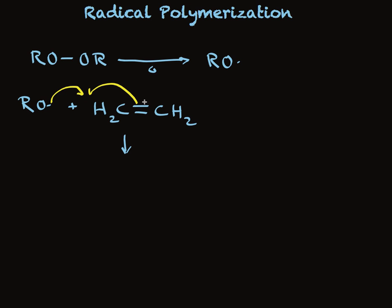The other electron from the pi bond goes to this carbon. We've done our electron bookkeeping with these fish hook arrows that indicate movement of single electrons. We form a sigma bond to a carbon and end up with a radical. This radical can react with more ethylene.